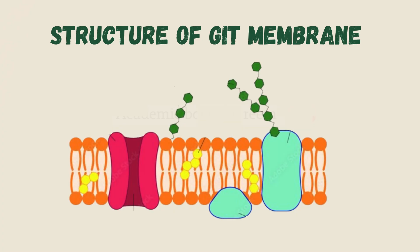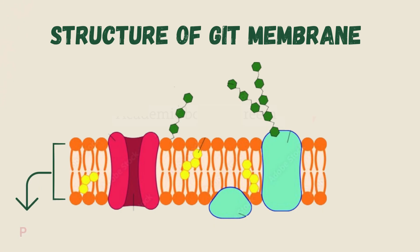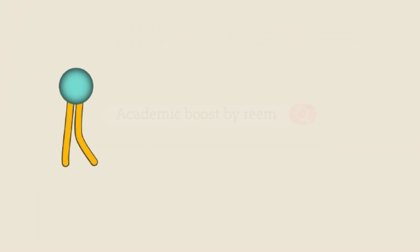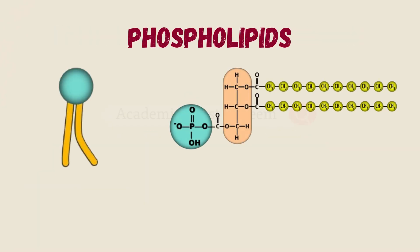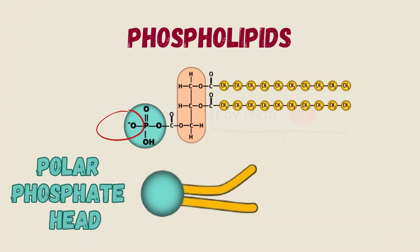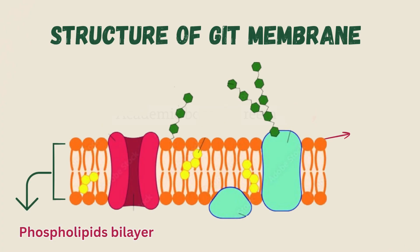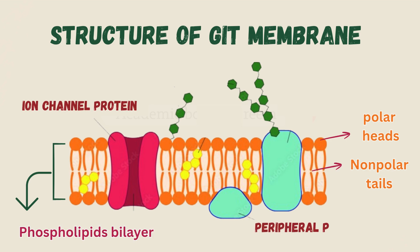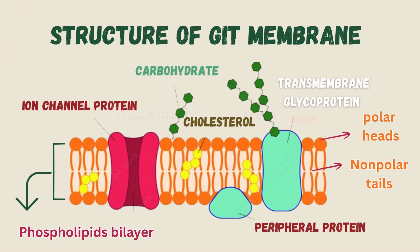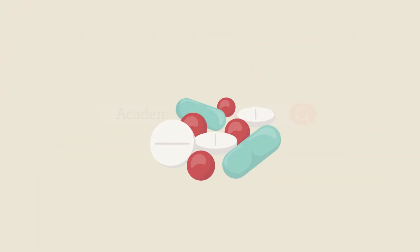First, let's recall the structure of the GIT cell membrane. It consists of two layers together called the phospholipid bilayer. The phospholipid structure has a head and a tail — the head is a polar phosphate group and the tail is non-polar fatty acids. At the surface we have polar heads, with non-polar tails in between, along with different protein types: channel proteins, peripheral proteins, cholesterol, carbohydrates, transmembrane glycoproteins, and some pores.